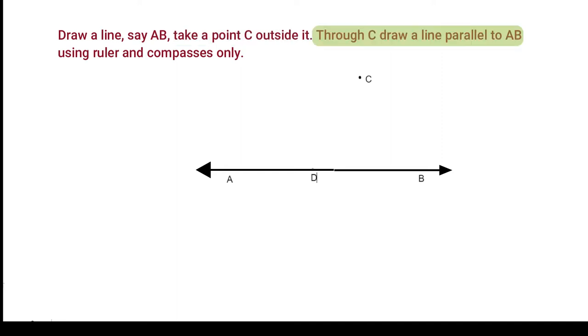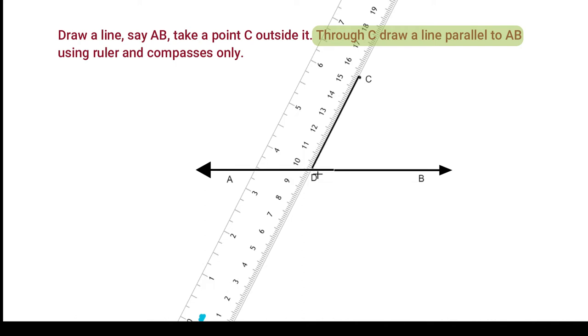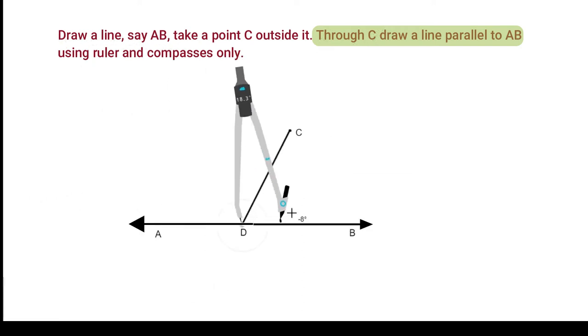Now, take a point on AB. We will name it as D and join D and C. With D as center and radius of your choice, draw an arc.